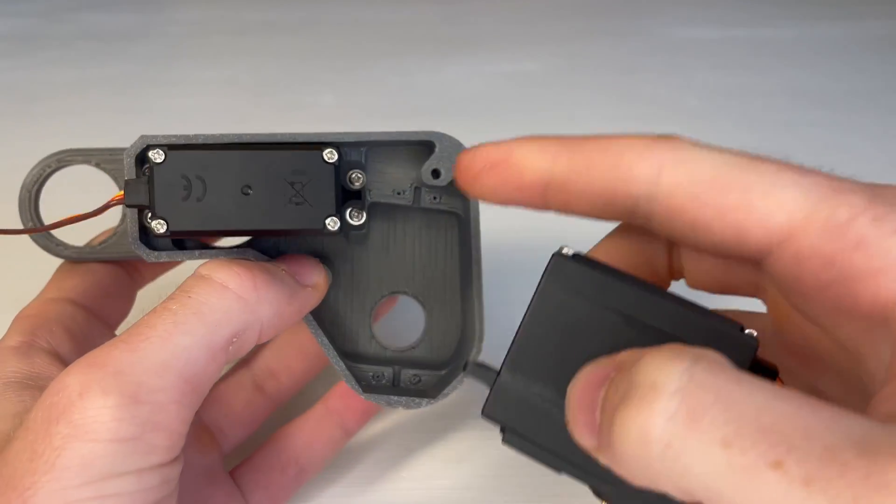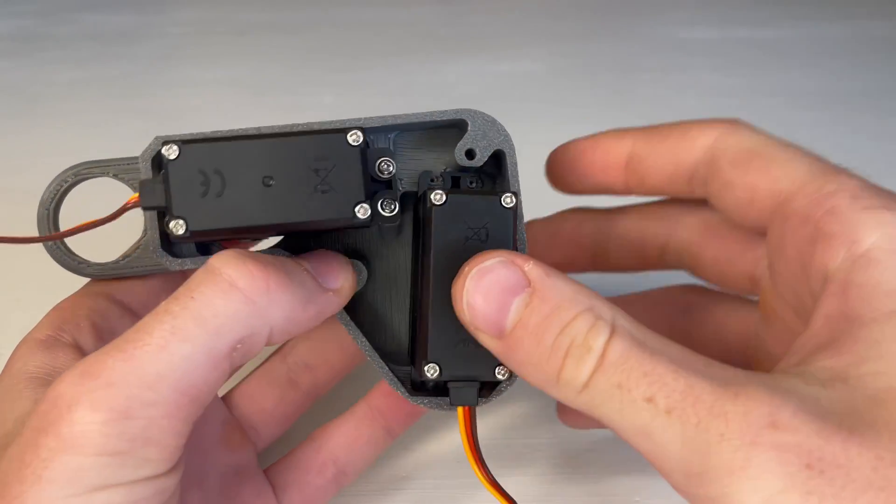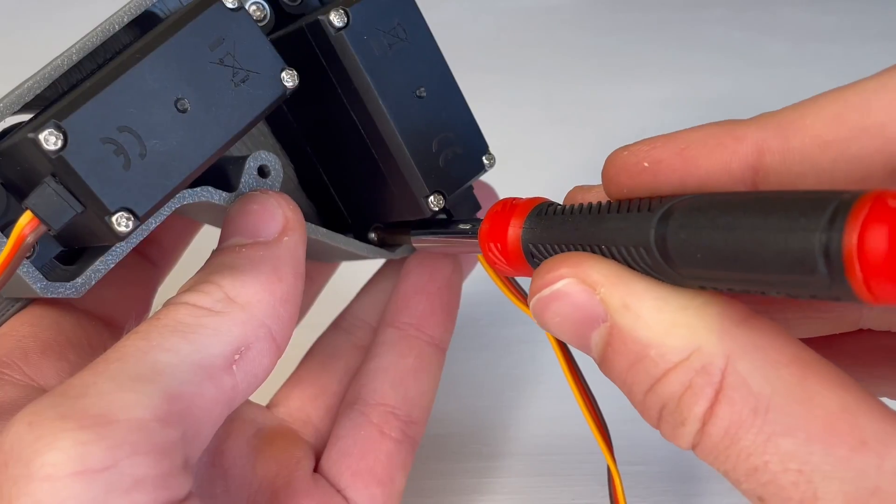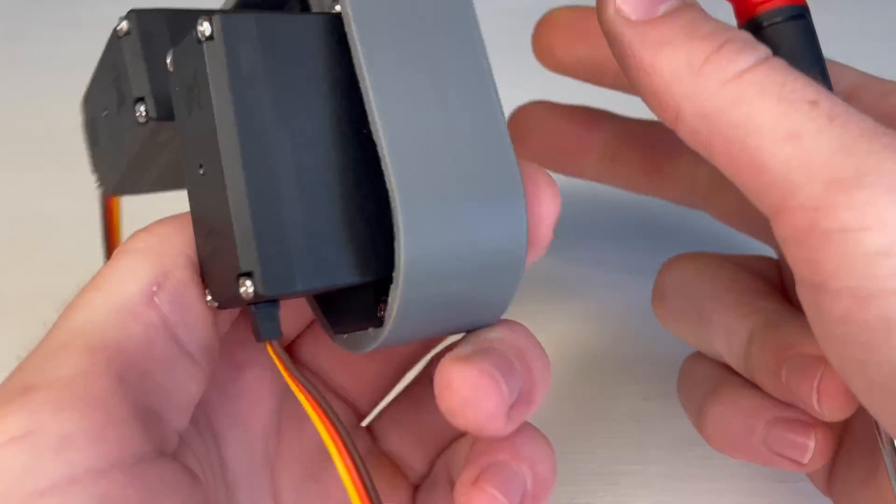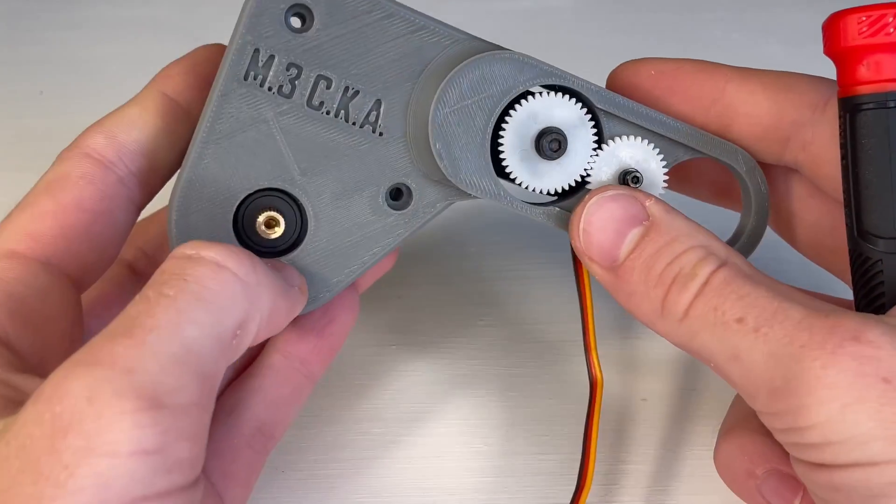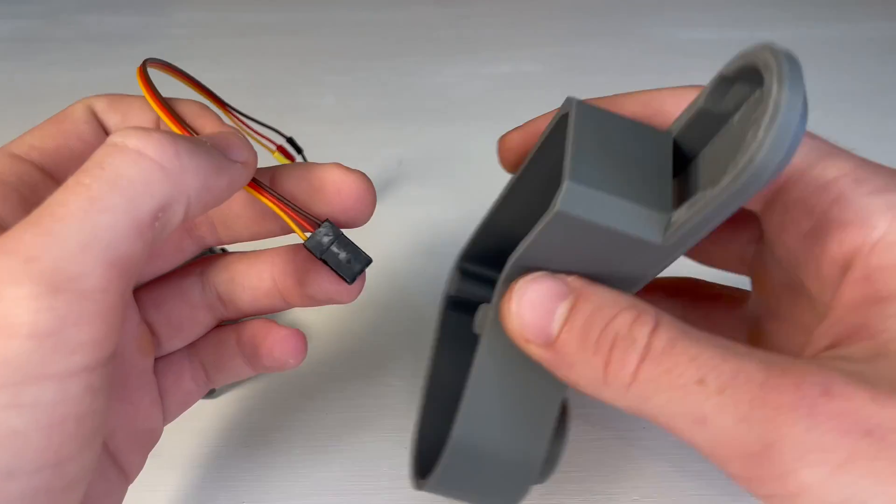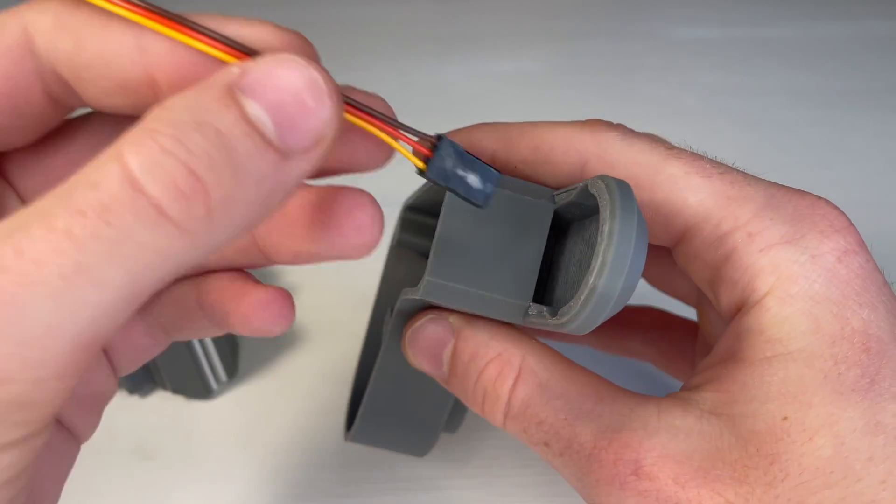Next we'll take our elbow servo and insert it next to the wrist servo. And we'll use those same screws from the servo bag. After that is screwed in we will feed our gripper servo wire through the other side of the forearm piece.